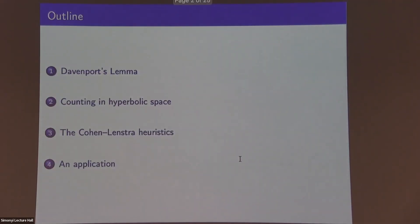Here's the plan: I'll talk about Davenport's Lemma, counting in hyperbolic spaces with effective error terms, and then describe some background about the Cohen-Lenstra heuristics — which I think is a beautiful and quite easy to explain story — and then I'll talk about how to find an application for these effective counting results as a case of the Cohen-Lenstra heuristics.